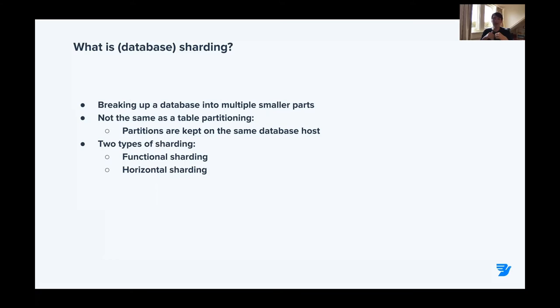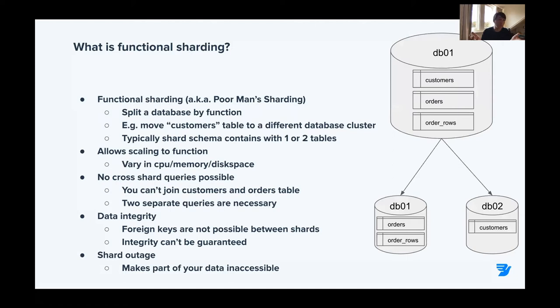There are two types of sharding: functional sharding and horizontal sharding. Functional sharding is what most people begin with — you split off a function from your schema. For instance, the customer table is becoming too large, so you move it to another database and separate it from the orders. The downside is that the customer table may not reflect an even workload with the orders table, meaning the two databases are not scaled evenly. The orders table is probably growing more rapidly.